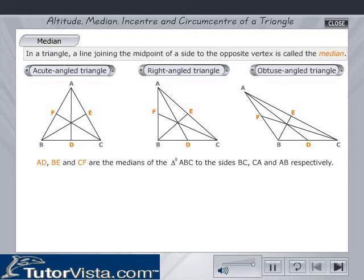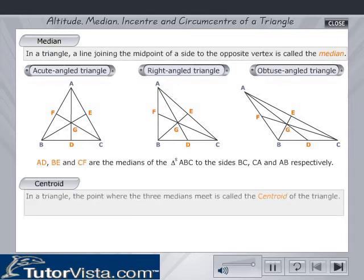We name the point of intersection of the three medians as G. Centroid of a Triangle. In a triangle, the point where the three medians meet is called the centroid of the triangle. In each of these triangles, G is the centroid.